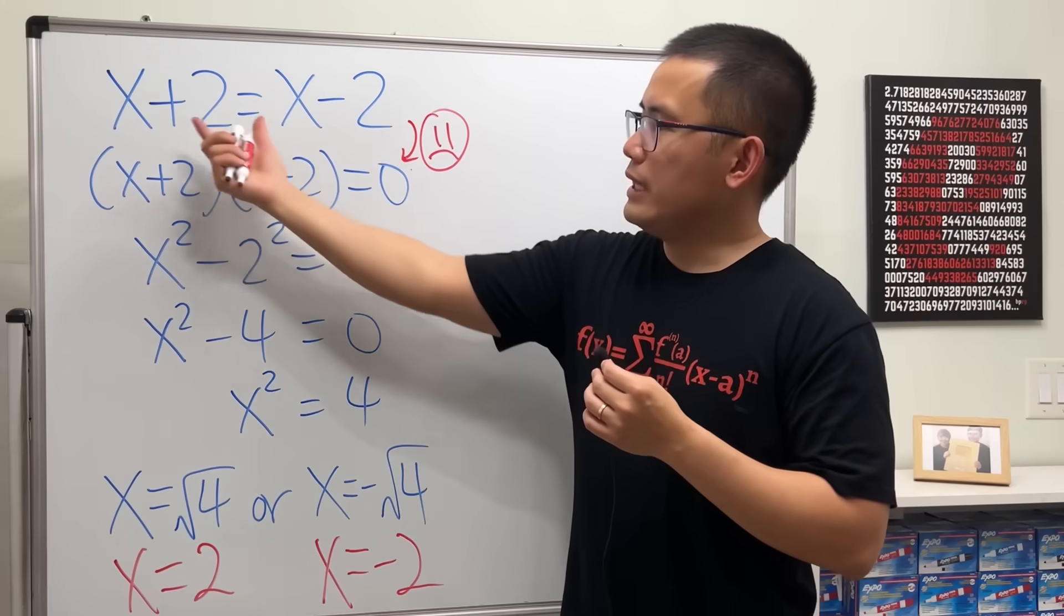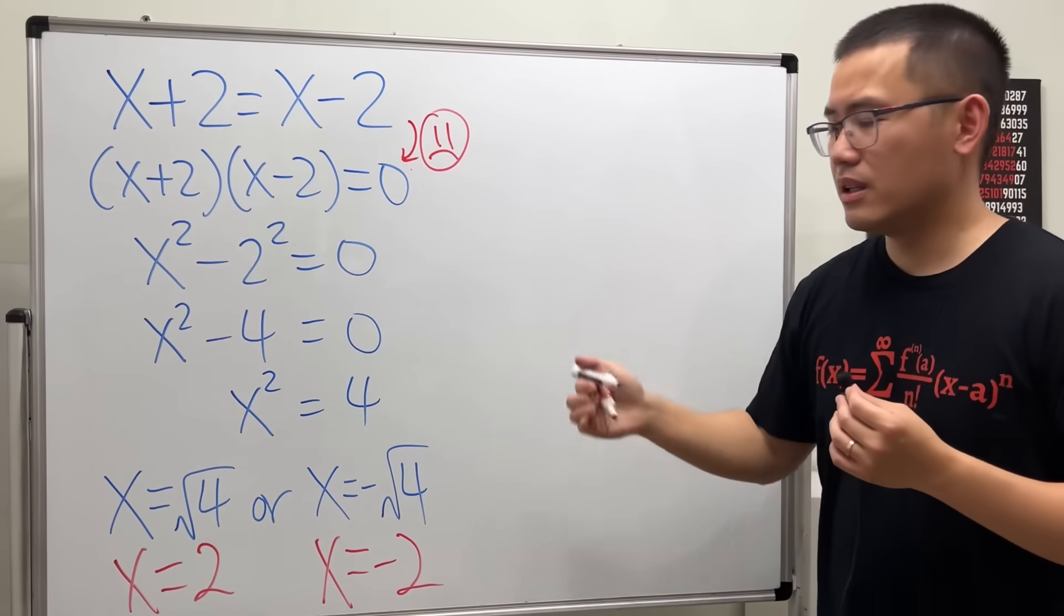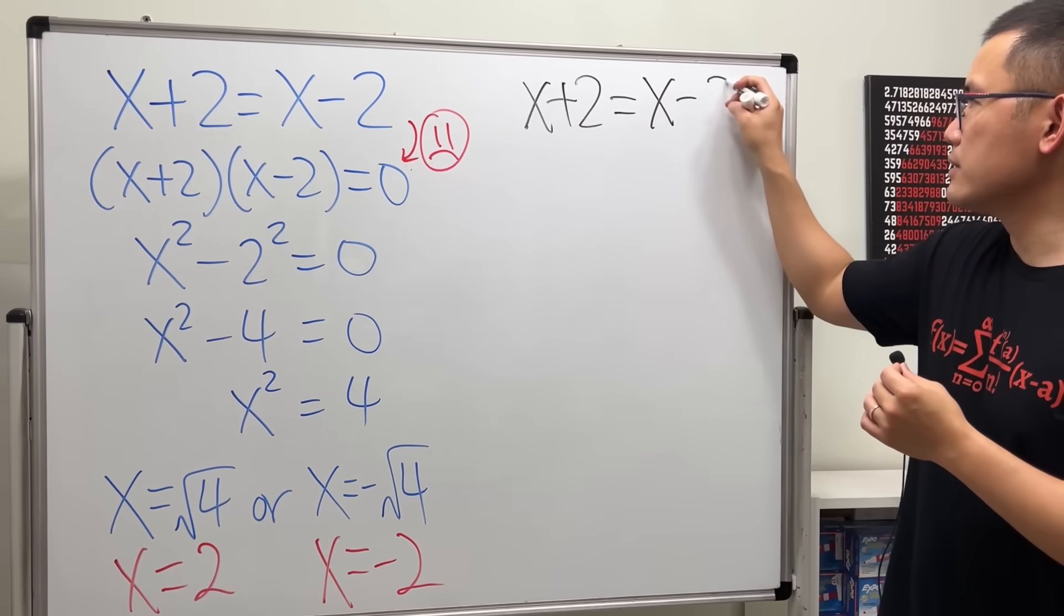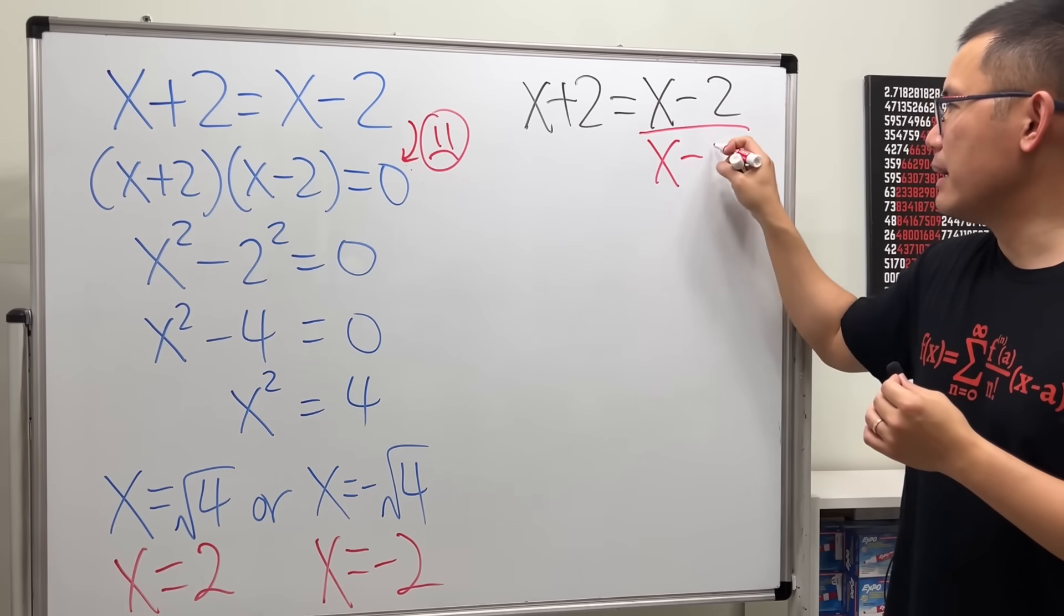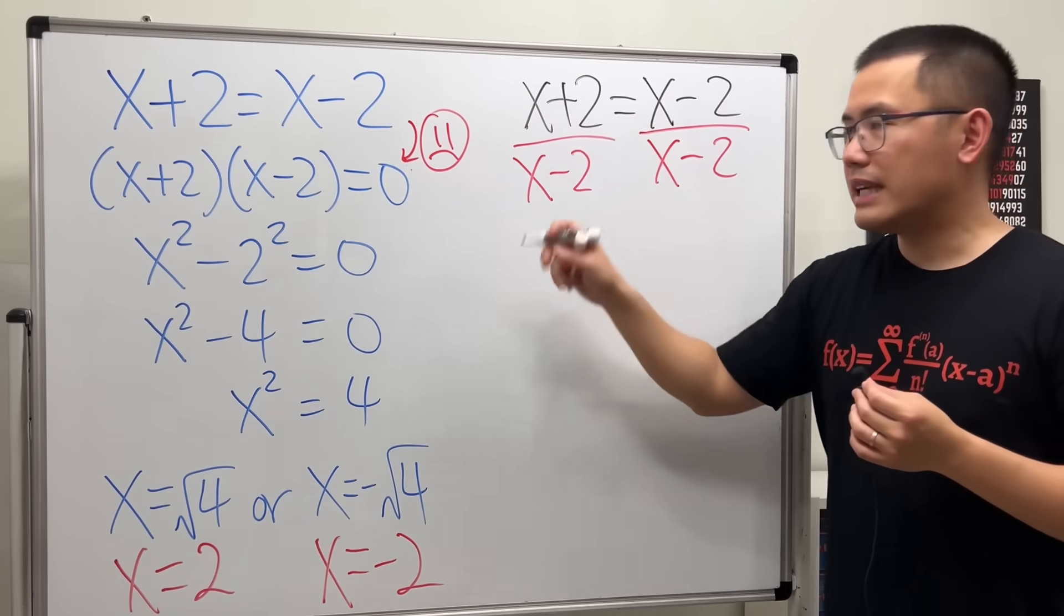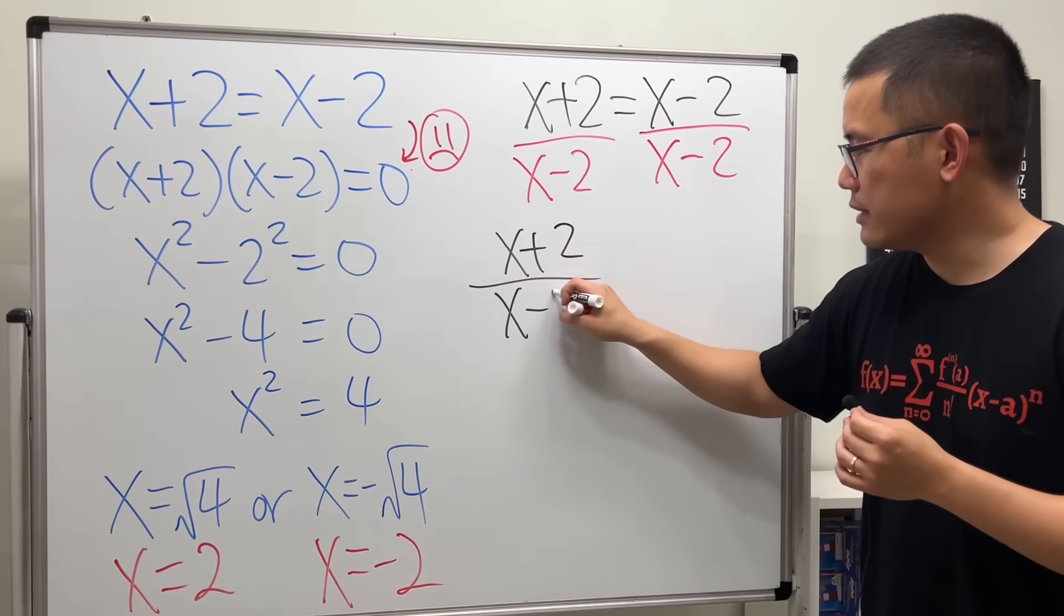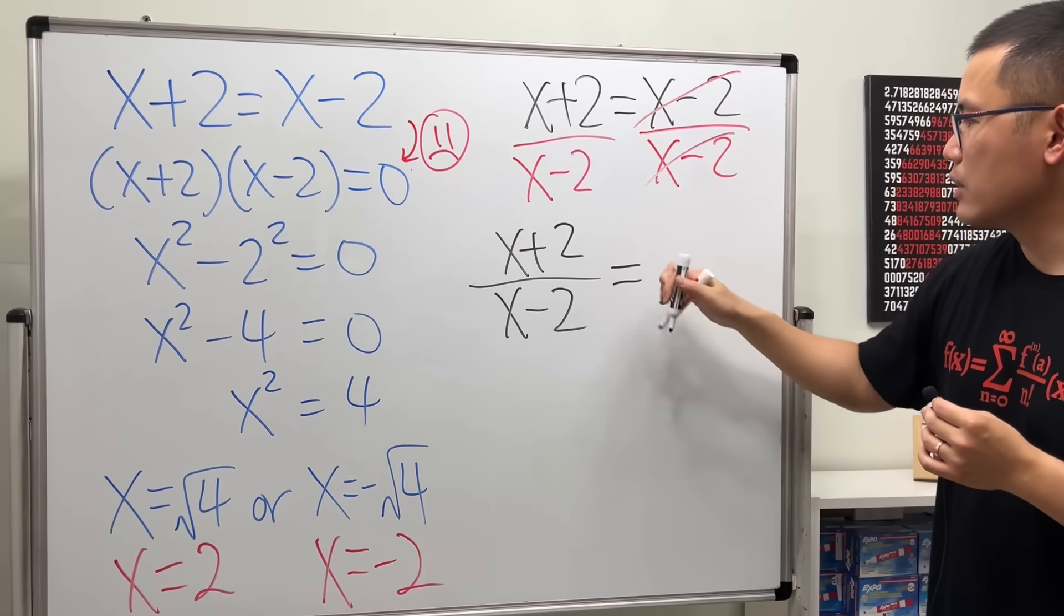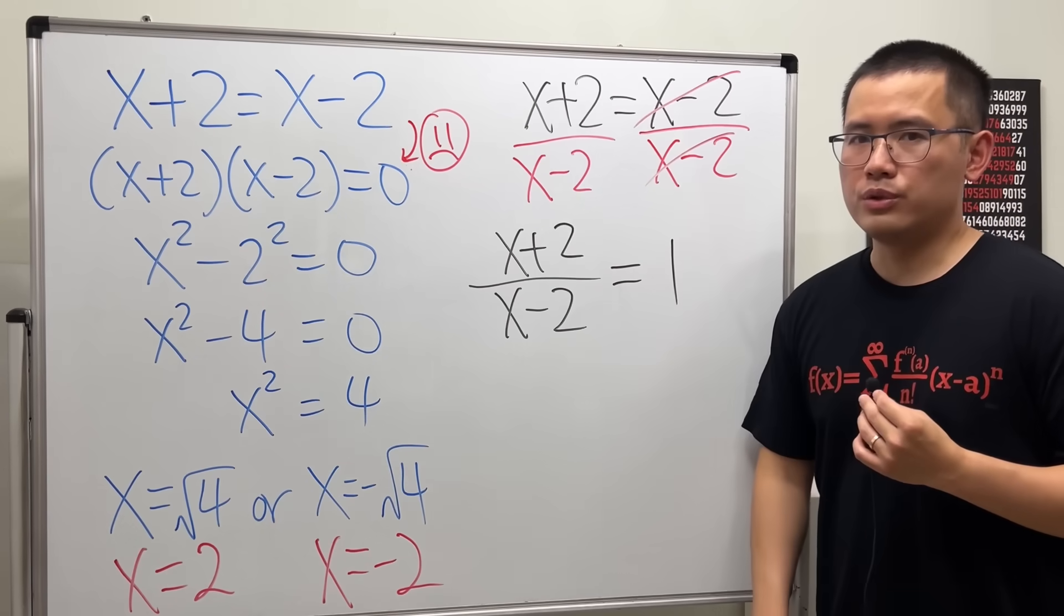So, when you bring this to the other side, you're not multiplying it. You're dividing. x plus 2 equals x minus 2. If you bring this term to the other side, you will have to divide it by x minus 2 on both sides. So, on the left-hand side, you will get x plus 2 over x minus 2. And on the right-hand side, this and that will cancel, and you get 1. So, that will be the correct approach to do this.